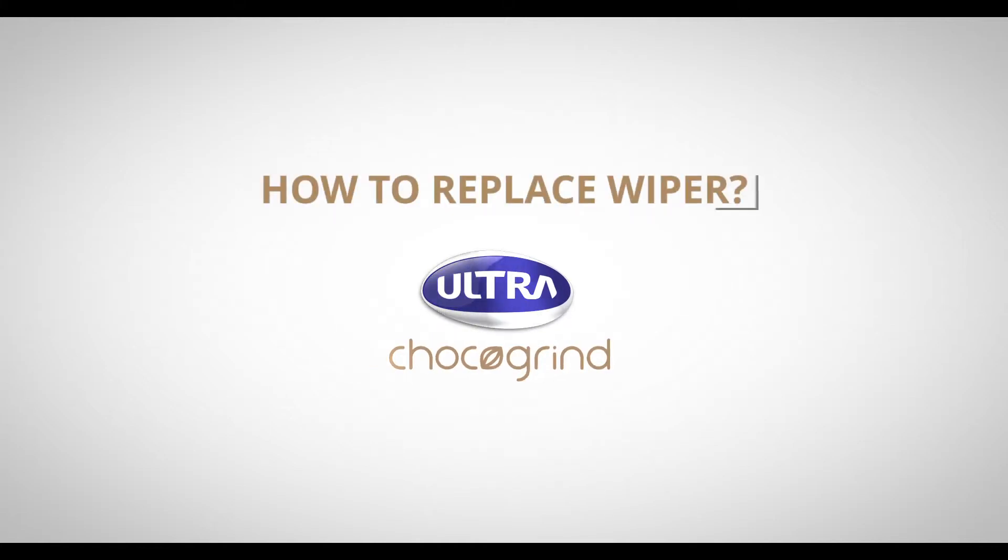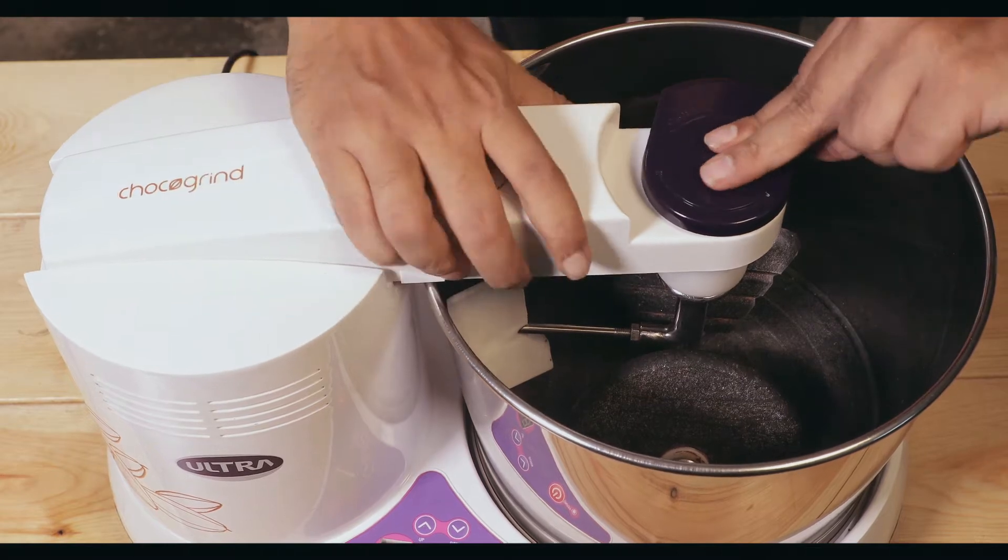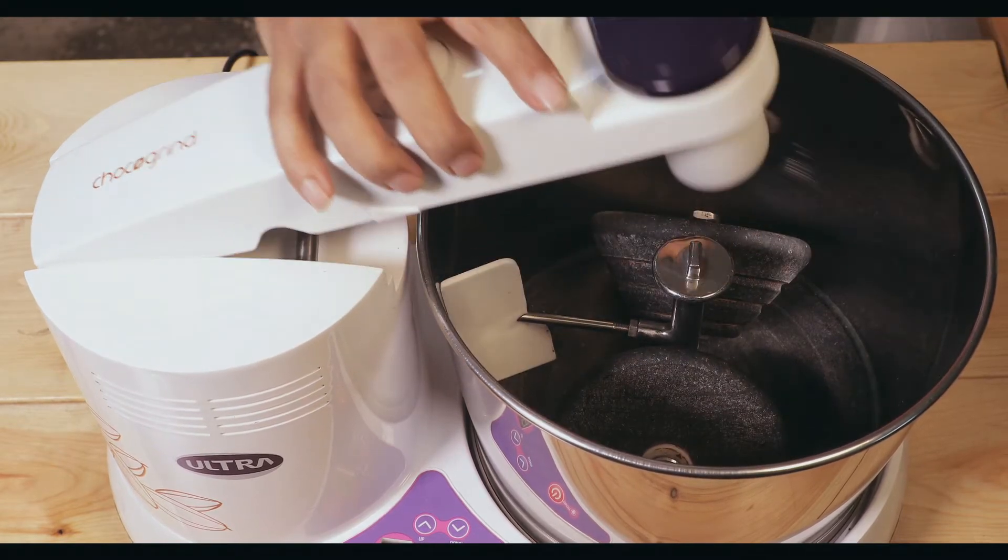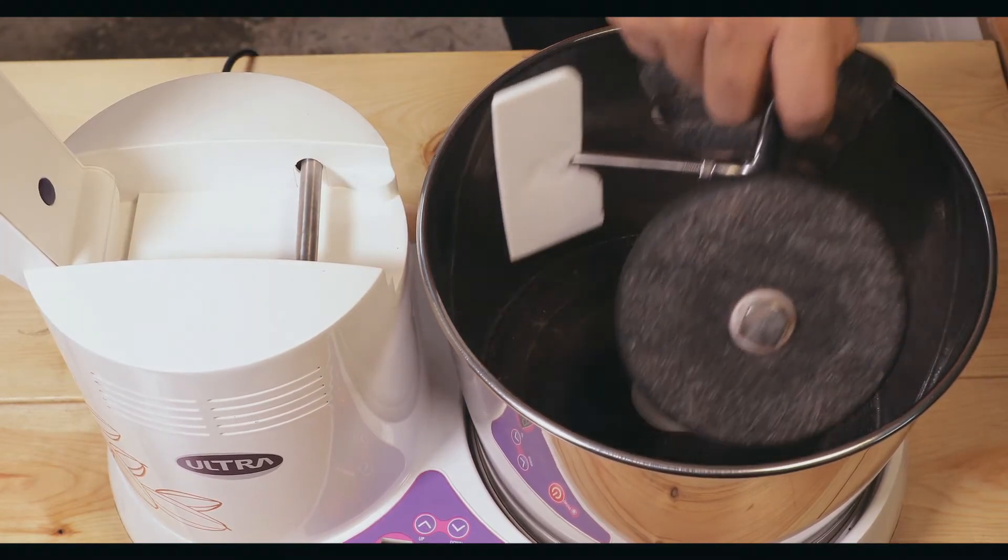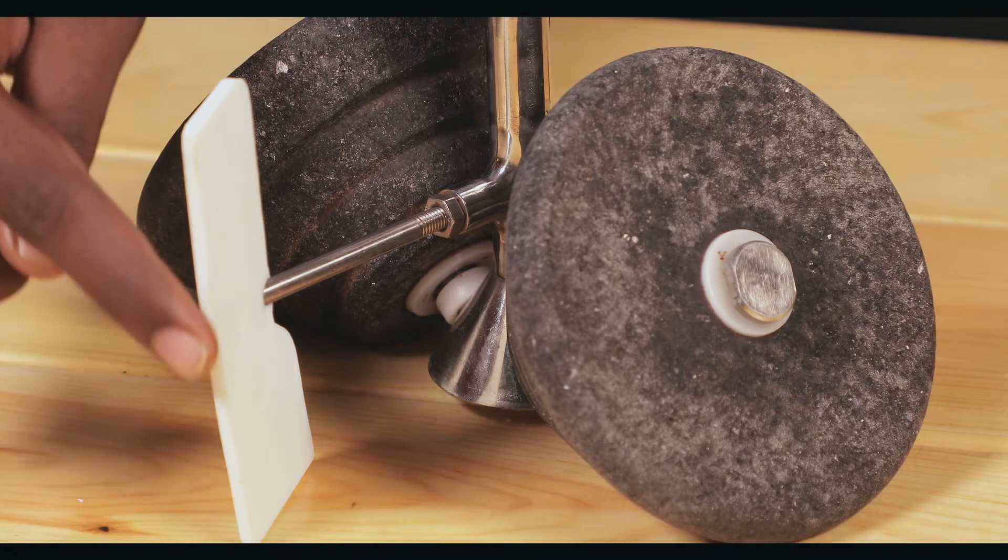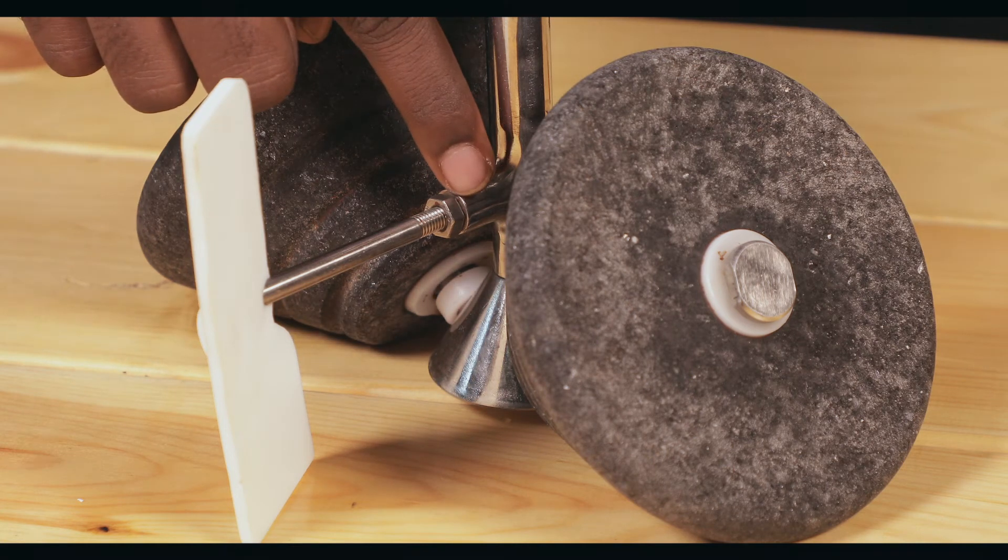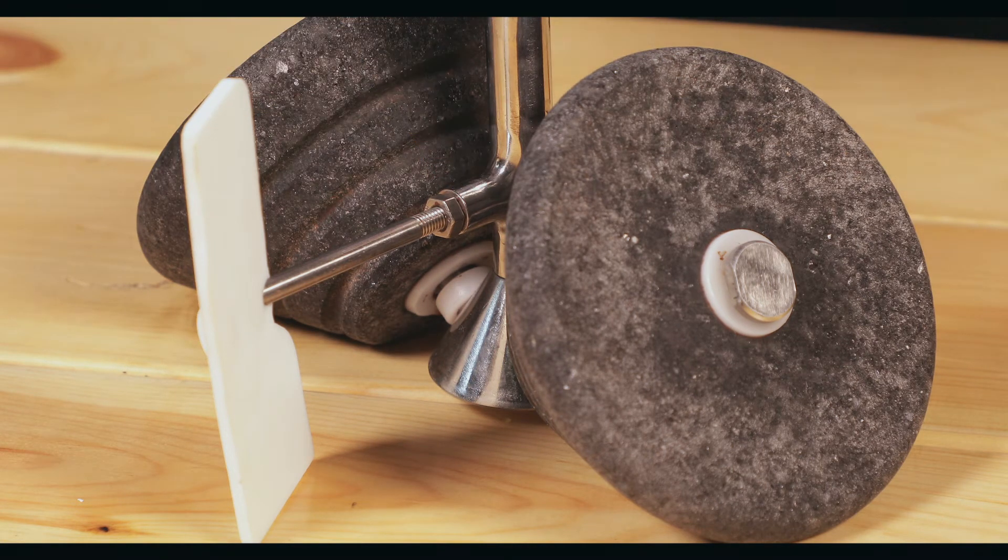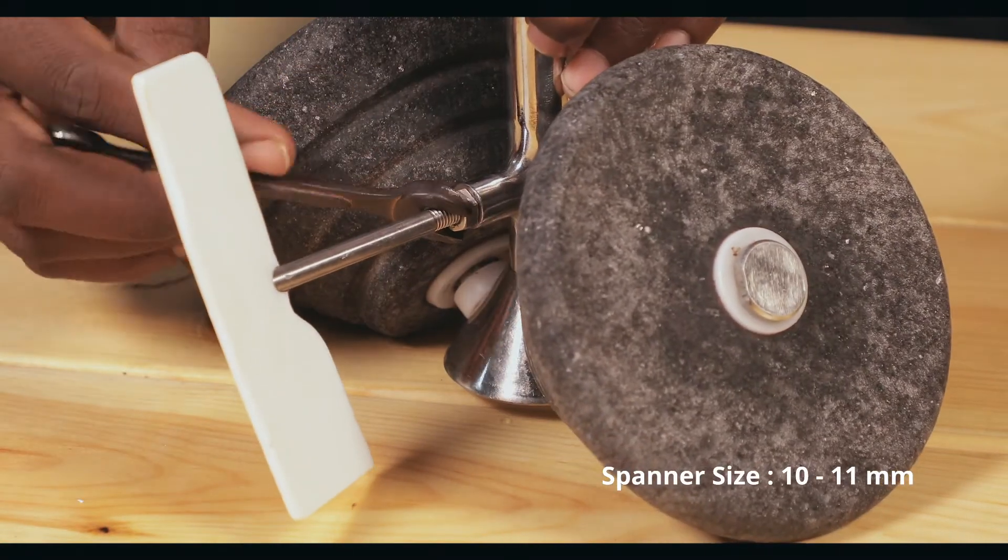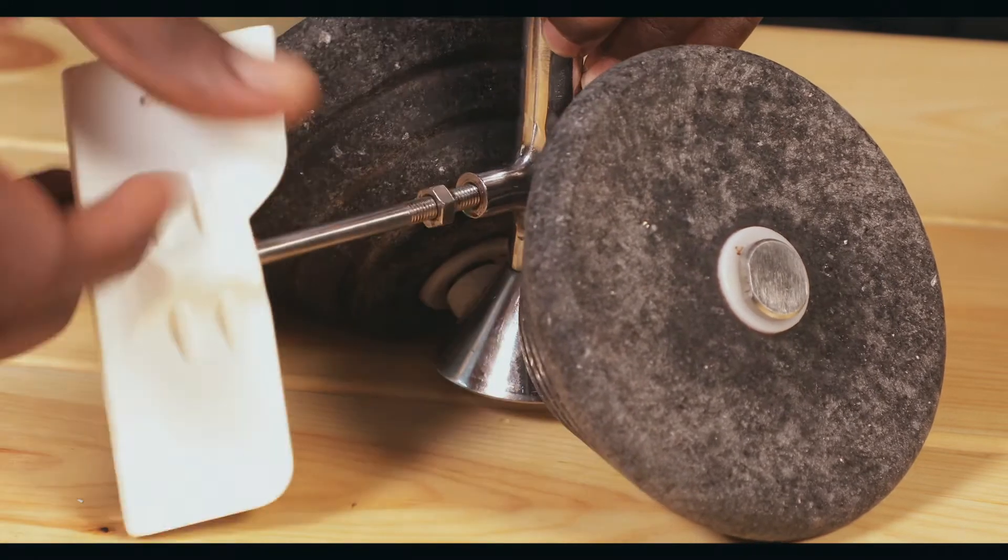How to replace wiper: Remove the roller stone assembly from the drum. To remove the damaged wiper, hold the nut that is attached to the wiper with a spanner and loosen it. Rotate the damaged wiper in an anti-clockwise direction.